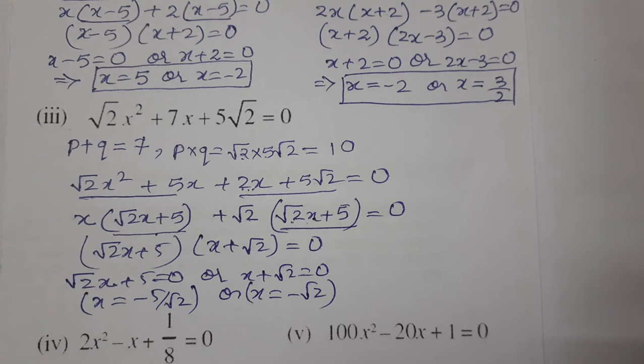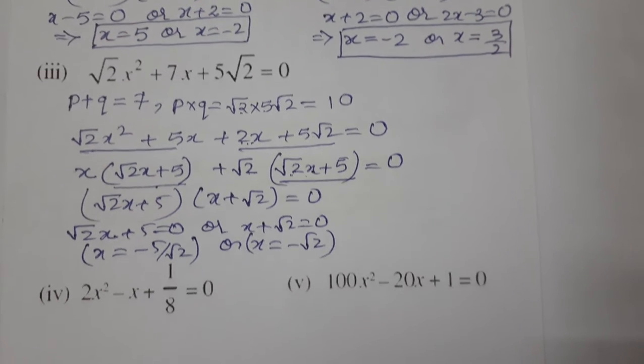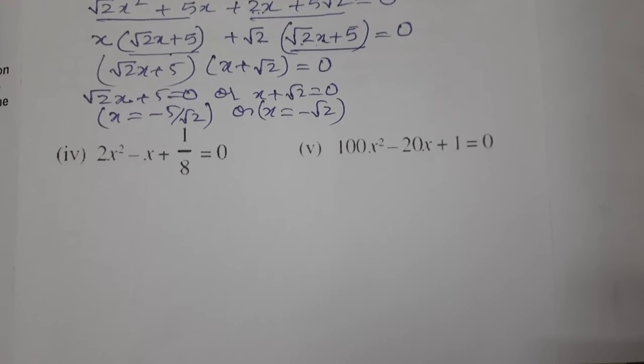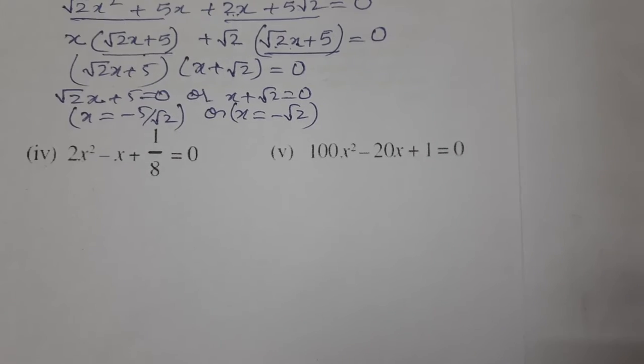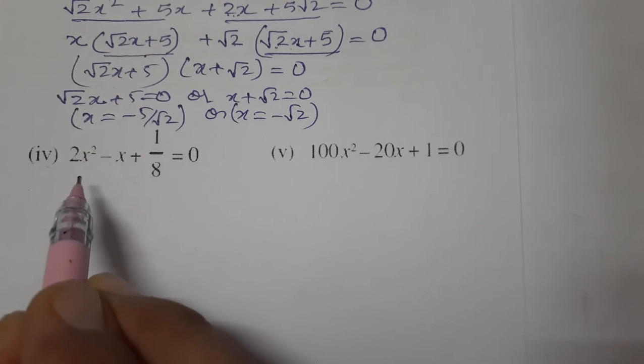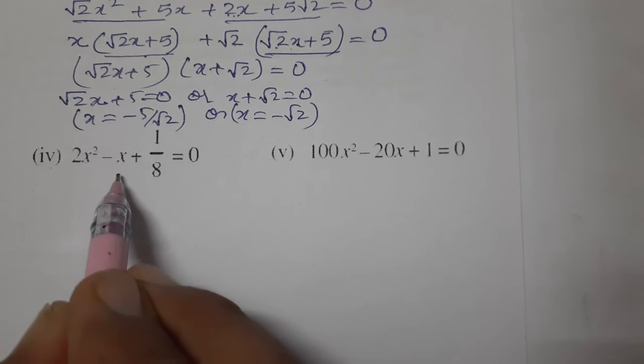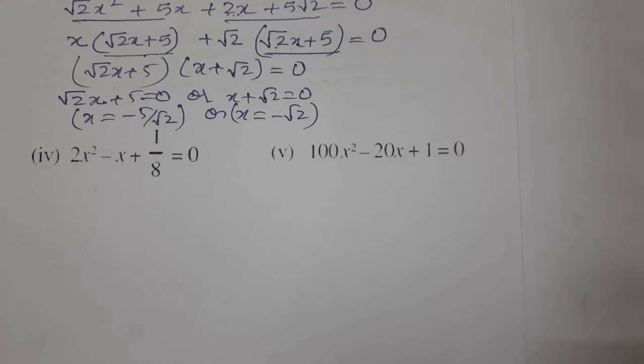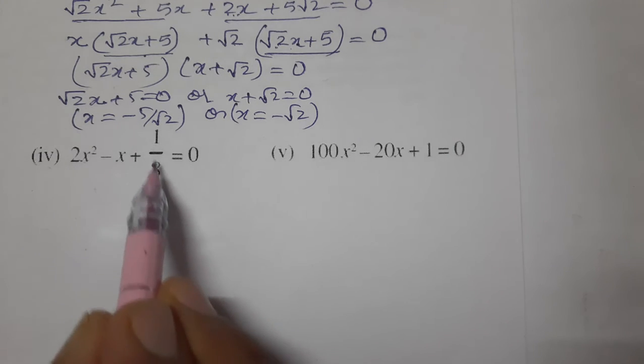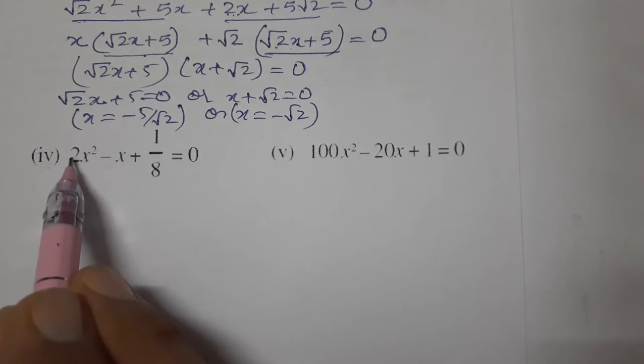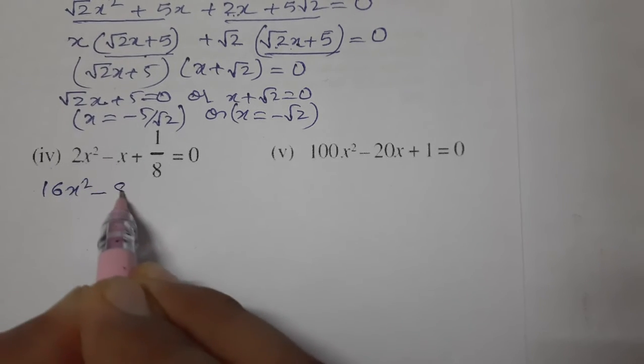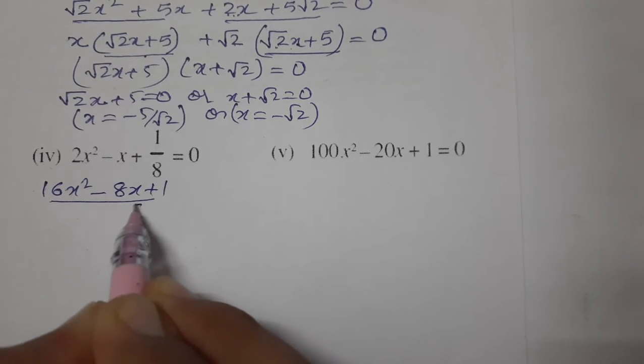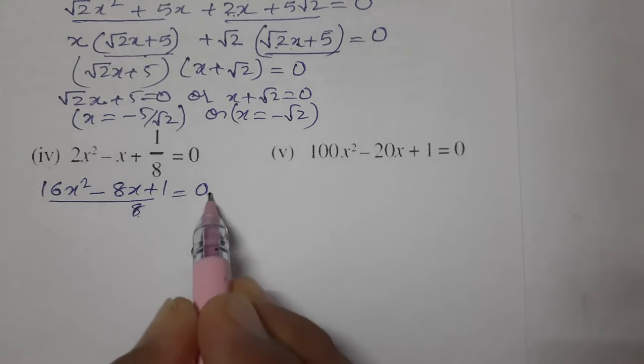Now we will do the remaining two questions, fourth and fifth. The fourth question is 2x² - x + 1/8 = 0. This fraction is creating a problem, so we will multiply by 8 throughout. Multiplying by 8: 16x² - 8x + 1 = 0.